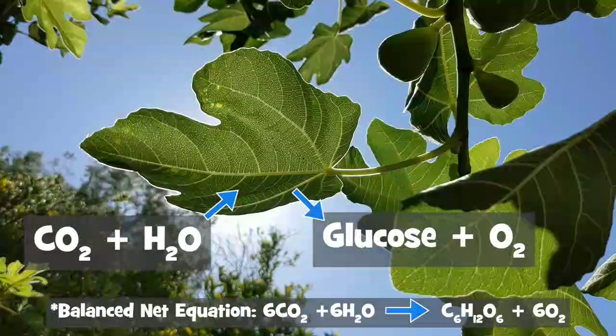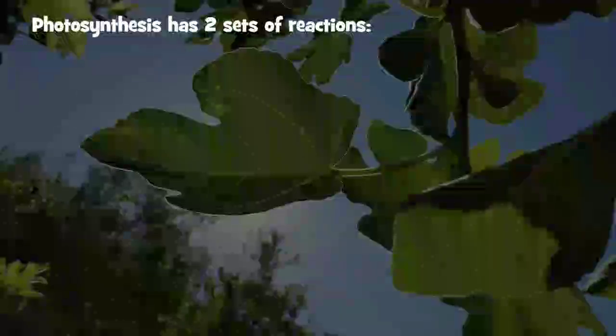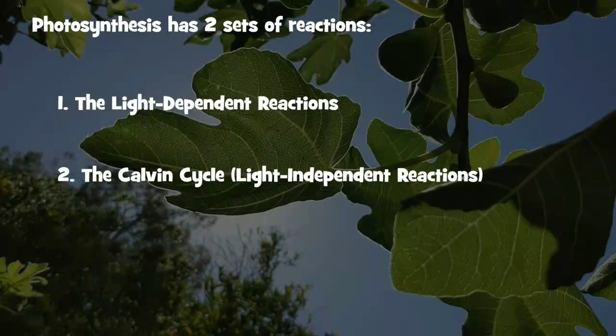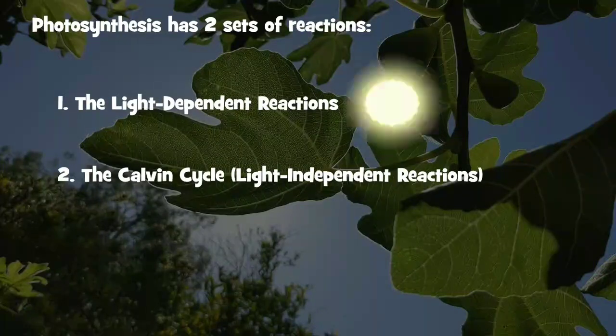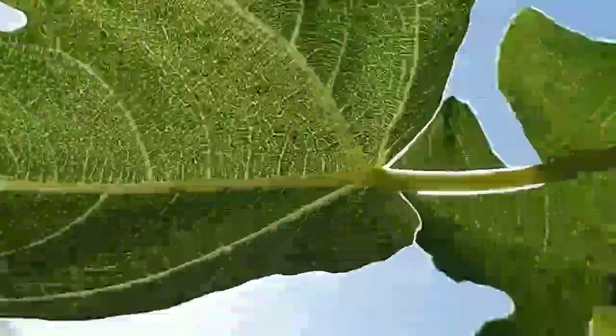Photosynthesis can be divided into two sets of reactions. One, the light-dependent reactions, and two, the Calvin cycle. The light-dependent reactions, as you might have guessed, depend on light. To understand how these work, let's zoom in on a leaf so we can see them happen.